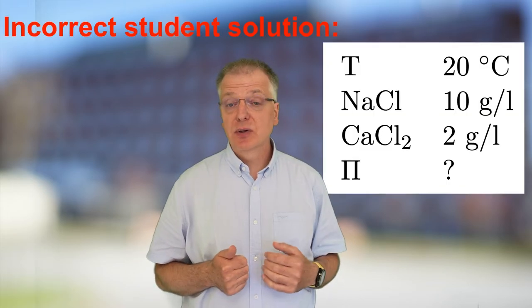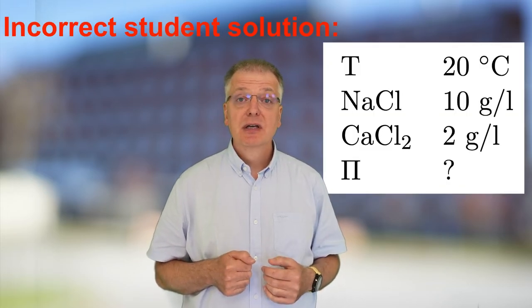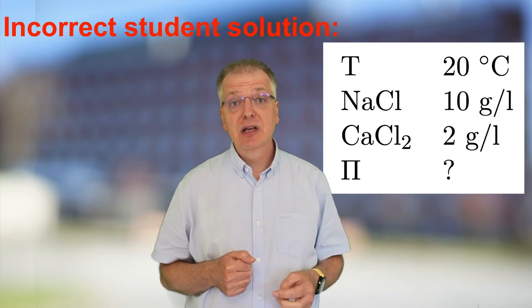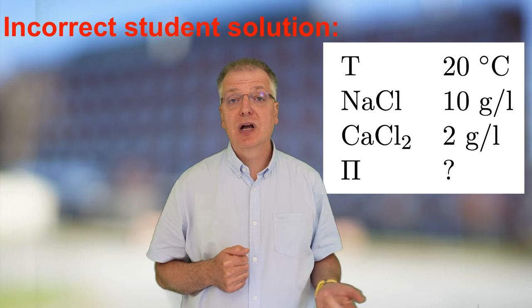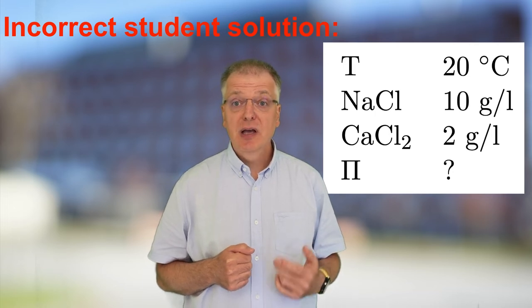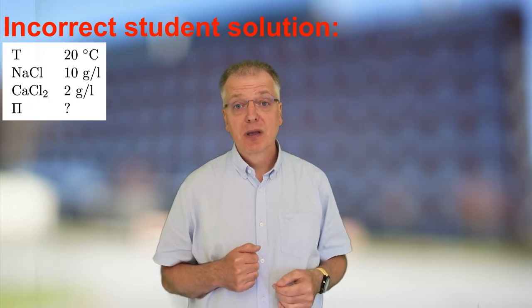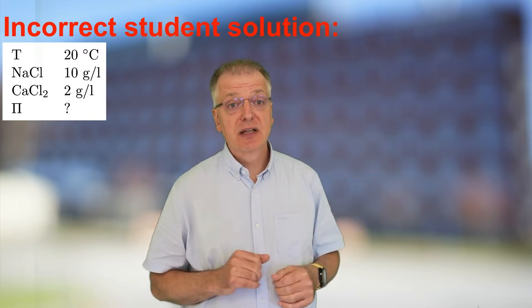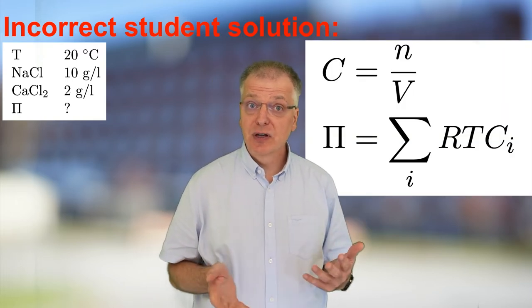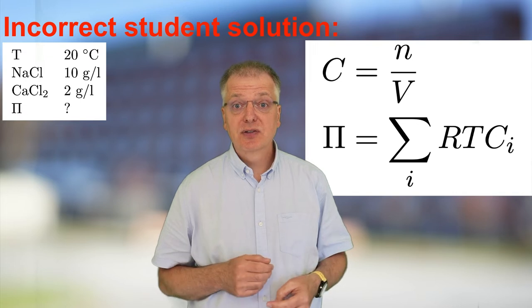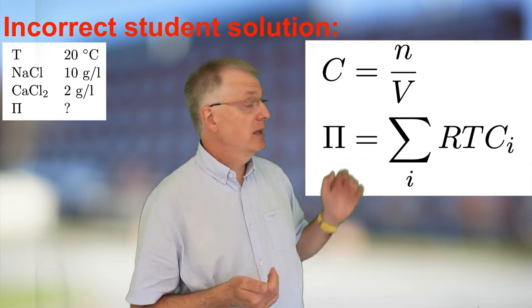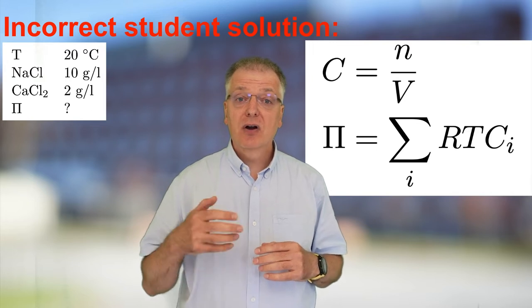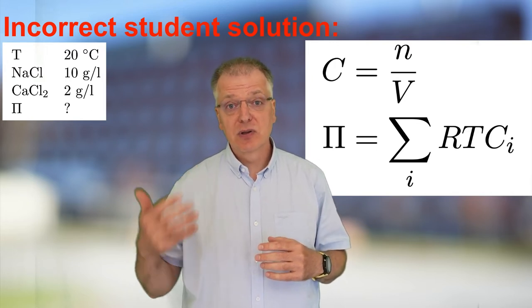To give you an example, let's look at this incorrect student calculation of osmotic pressure in 20 degrees centigrade liquid water where 10 gram of sodium chloride and 2 gram of calcium chloride have been dissolved per liter of water. We know that c equals n divided by v, and if no further information is given, we may assume that the osmotic pressure can be estimated using the equation pi equals the sum of r times t times all the concentrations.